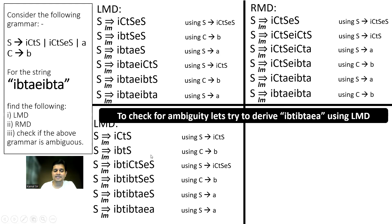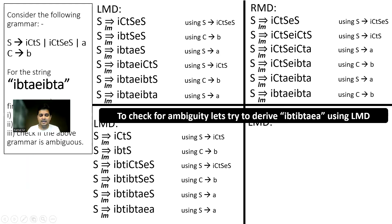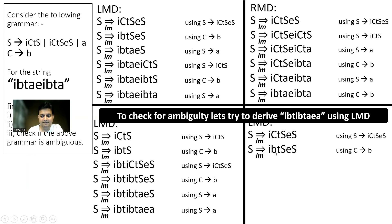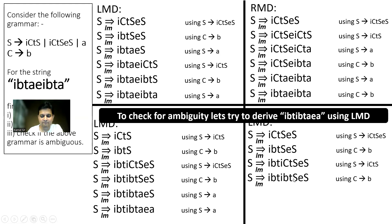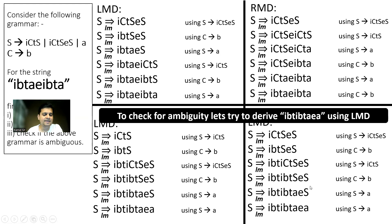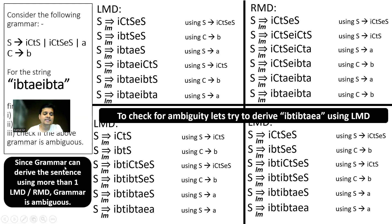Instead of starting with ICTS E S, you can start with ICTS E S as well. Then the leftmost is replaced with B, then the leftmost is replaced with ICTS, then leftmost with B, then leftmost with A, and leftmost with A. Since the grammar can derive the sentence using more than one LMD, the grammar is ambiguous.